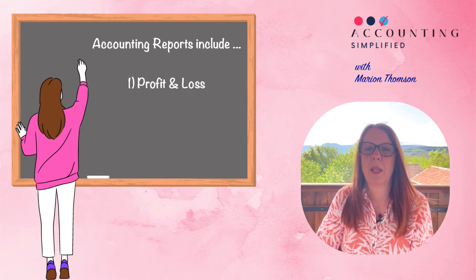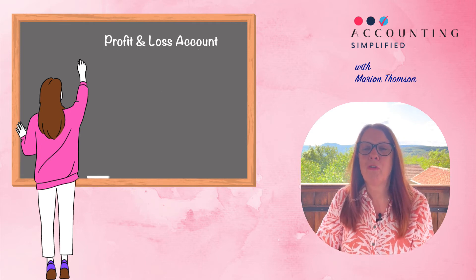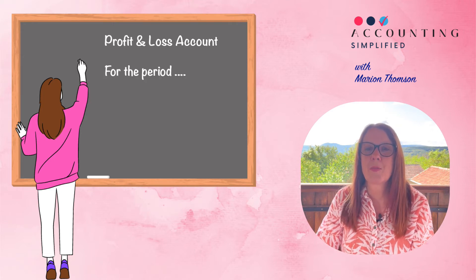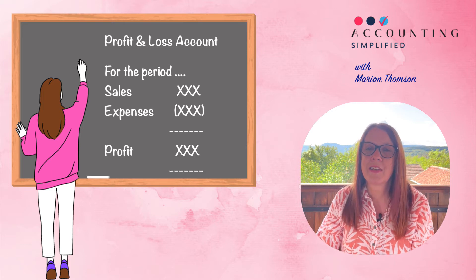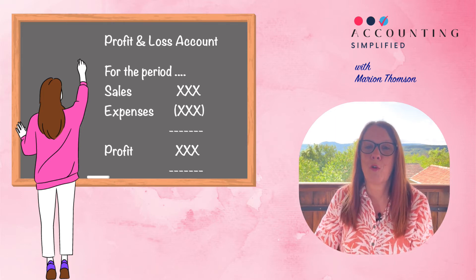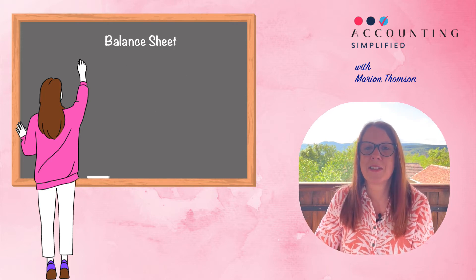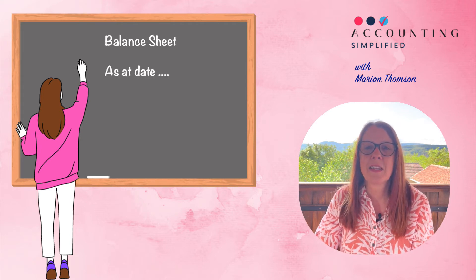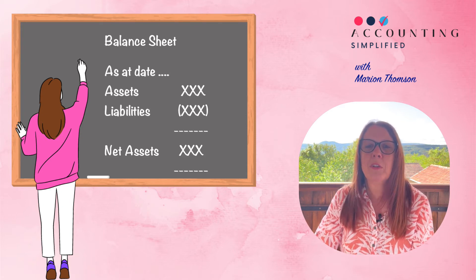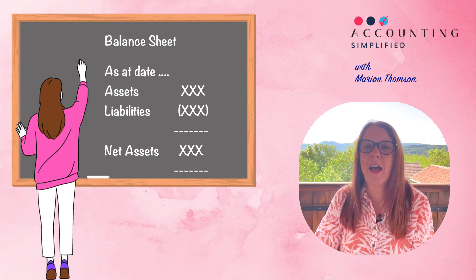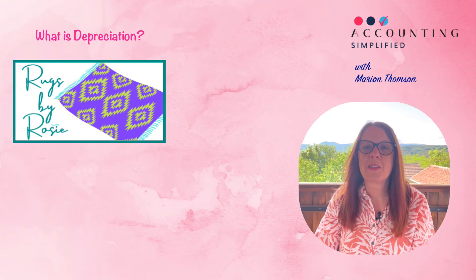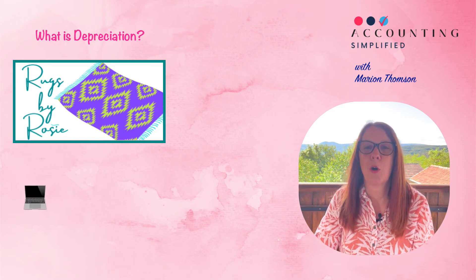There are two main reports in accounting. We have a profit and loss account, sometimes referred to as an income statement, and a balance sheet. The profit and loss account is easier for non-accountants to understand — it's a report that shows you, for any specific period in time, your sales, your expenses, and hopefully your profit for that period. The balance sheet is a snapshot at any point in time of the value of your business — the net assets — so assets less liabilities giving you the value of your business.